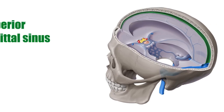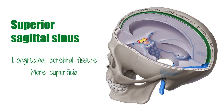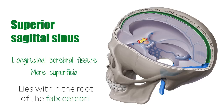The superior sagittal sinus is situated in the longitudinal cerebral fissure. There are two sagittal sinuses that occupy the longitudinal cerebral fissure, which is situated at the midline between the cerebral hemispheres. The superior sagittal sinus is the more superficial of the two sinuses located in this area, the other being the inferior sagittal sinus, which will be discussed in a separate tutorial. The superior sagittal sinus lies within the root of the falx cerebri.